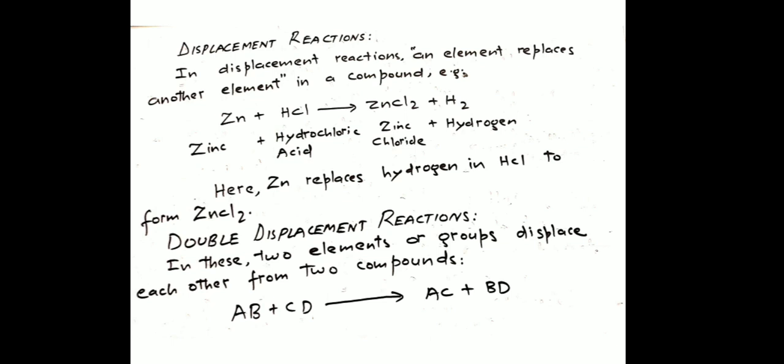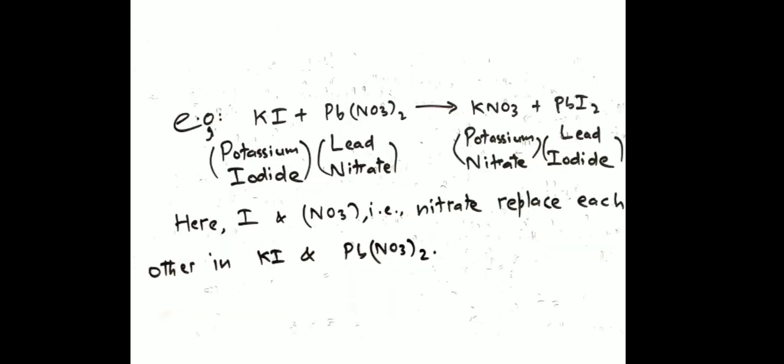There are also double displacement reactions, in which two elements are displaced. For example, AB plus CD gives AC plus BD — A has displaced D and B has displaced C. Two groups or elements replace each other. The example of double displacement shown here is potassium iodide reacting with lead nitrate. One thing to remember: either an element or a group is displaced. NO3 is called the nitrate group.